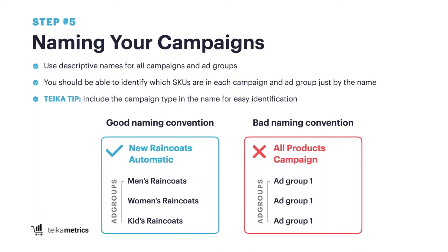A lot of sellers simply use the default name 'ad group one,' and it's really difficult to extrapolate any data there if it's all generic names and you're not sure which products are in which ad groups. Make that initial investment when you're doing the setup so that down the line as you're optimizing, you don't have to spend time figuring out what is ad group one. A good formula to think about is putting in the category, the product, the objective, and the campaign type — for example, 'new raincoats automatic' right there in the title.